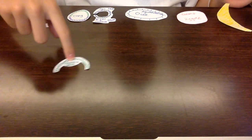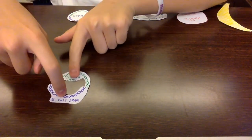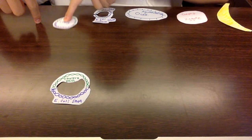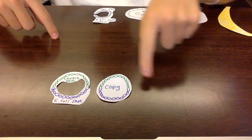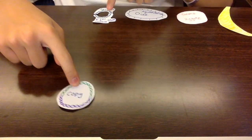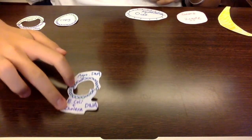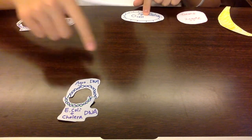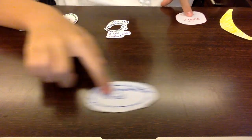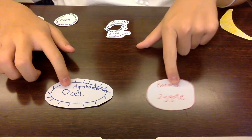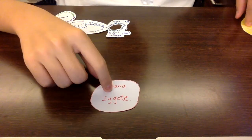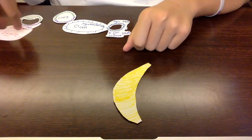So the process looks like this. First, cholera DNA is spliced and combined with E. coli DNA. Then the modified DNA gets into the E. coli cell, and the cell helps it to replicate, creating a bunch of copies. Then the modified DNA is spliced again and combined with the agrobacterium DNA. The new modified DNA gets into the agrobacterium cell. The agrobacterium cell, which carries the modified DNA, infects the banana zygote. The banana zygote grows into a complete banana and becomes the banana vaccine.